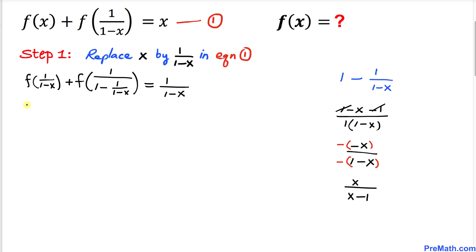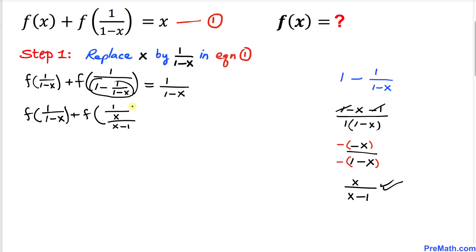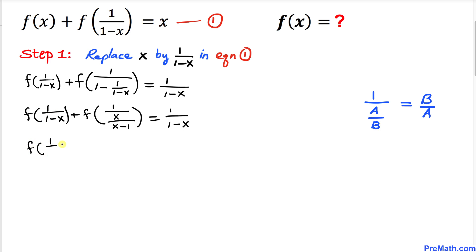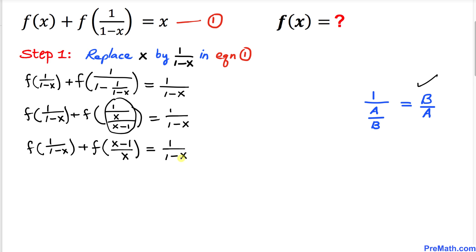Reverting back to the equation, we can replace that denominator expression, giving us f(1/(1-x)) + f(x/(x-1)) = 1/(1-x). Let's call this equation number 2.